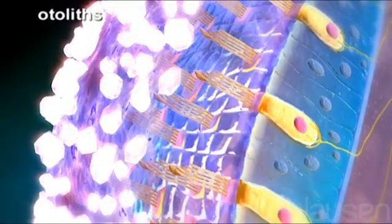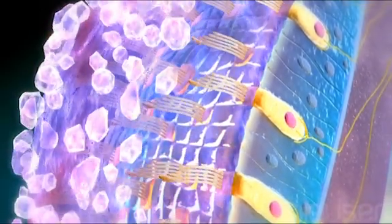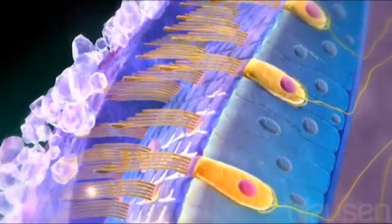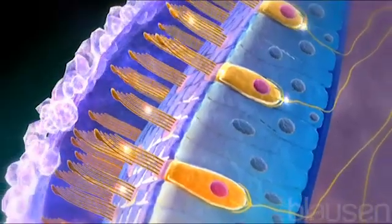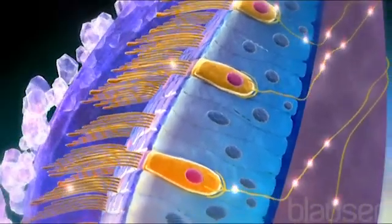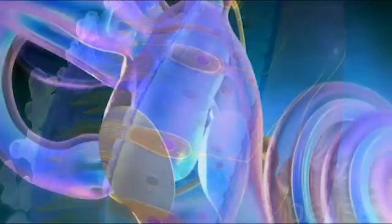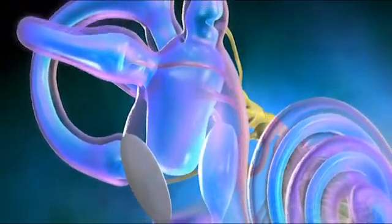When the head tilts, gravity moves the crystal mass and distorts stereocilia of the hair cells. This is how the saccule and utricle provide information about position with respect to gravity.